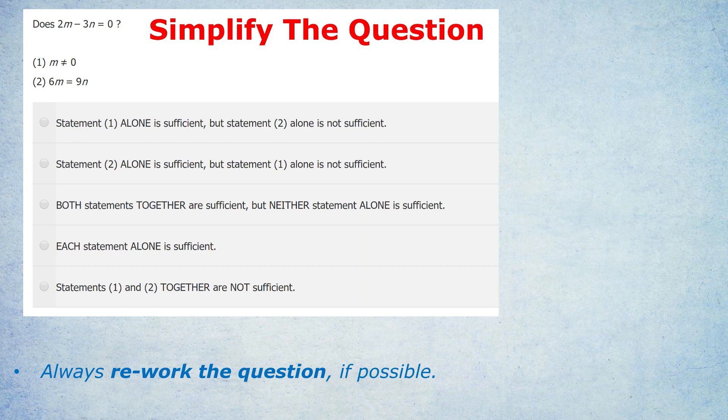This should be a top priority of yours, if possible, and it usually is possible, to rework or simplify the question, be it algebra, inequalities, or even word questions, so that you're ready for the statements. Don't rush into reading the statements. Rework the question. For this question, that minus and then equaling zero is just a little bit confusing to me. It would be neater for me if I added 3n to both sides. And that would give us 2m equals 3n question mark.